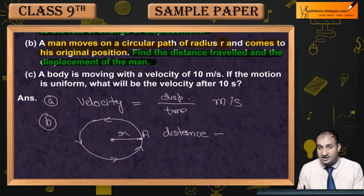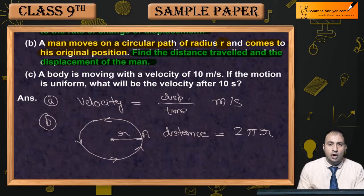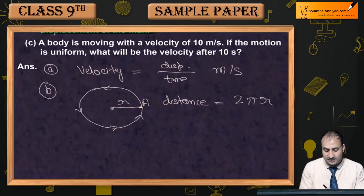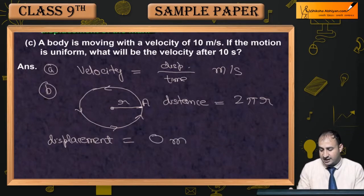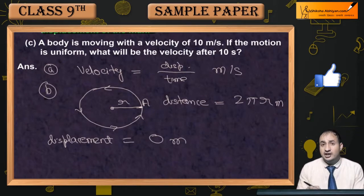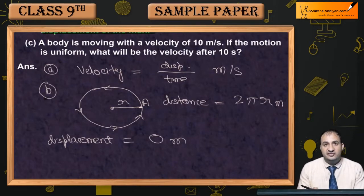तो इस case में distance is circumference of the circle, जो कि 2πr होता है formula। और displacement की बात करें तो displacement यहां पर 0 meter आ जाएगा — यह meter में लिखते हैं — तो 0 meter होगा, क्योंकि final और initial point तो same हैं, तो दोनों की बीच में difference 0 का होगा। तो displacement = 0।